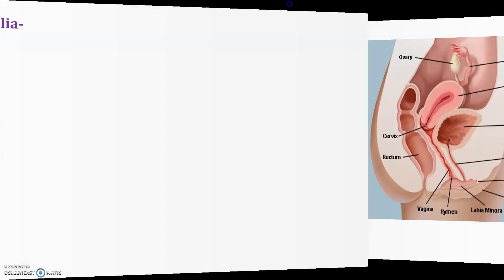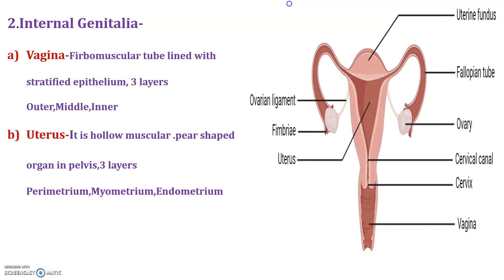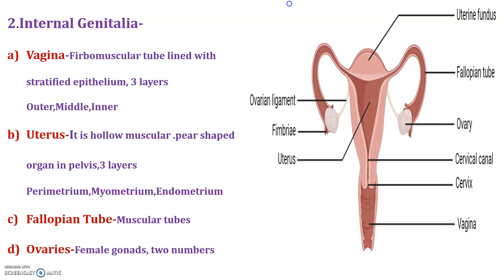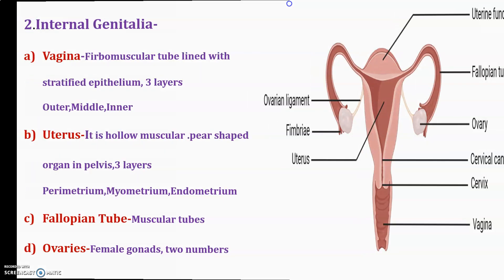After the external parts, the internal organs of the female reproductive system contain: vagina, uterus, fallopian tubes, and ovaries.